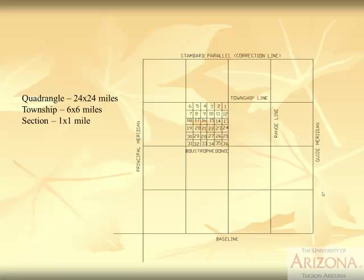This is a typical picture we saw last week talking about rectangular survey systems. This is a quadrangle — a quadrangle is 24 miles by 24 miles. Townships are the smaller squares in there, each six miles on a side. How much area is that? 36 square miles in each township. Each township is further divided into sections, numbered one through 36, each one mile per side.